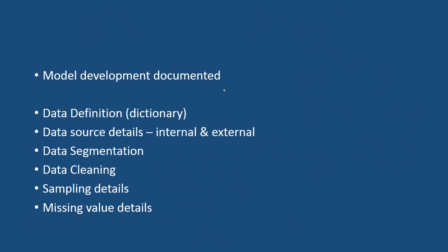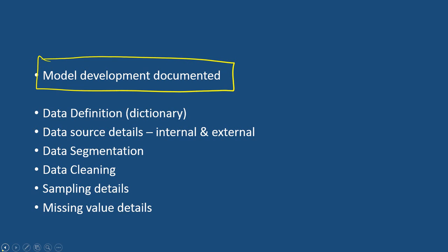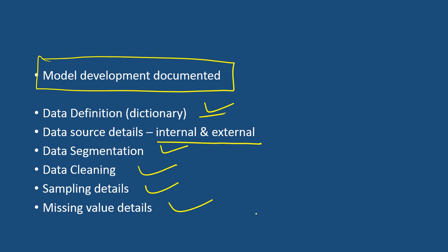The model development document is essential — without it a model cannot go to production. It should contain clear data definitions, a data dictionary, data source details (internal and external), data segmentation, data cleaning, sampling, and missing value details. Data definition is not just a dictionary — every variable should be explained in the most granular way, because any discrepancy in data definition can create real trouble in future.